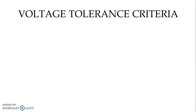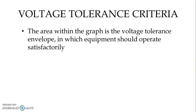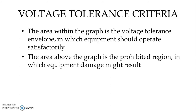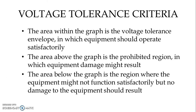The graph is divided into three regions. The area within the graph is the voltage tolerance envelope in which equipment should operate satisfactorily. The area above the graph is the prohibited region in which equipment damage might result. The area below the graph is the region where the equipment might not function satisfactorily but no damage to the equipment should result.